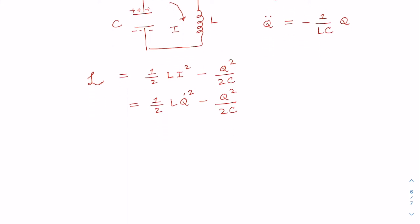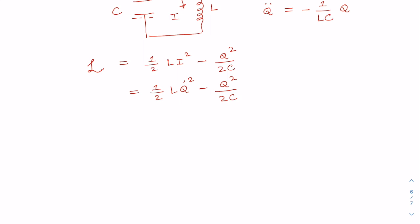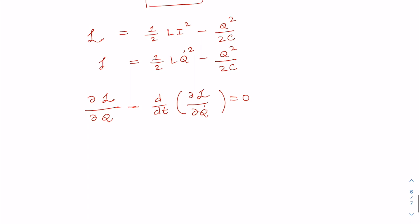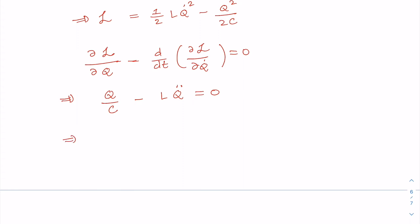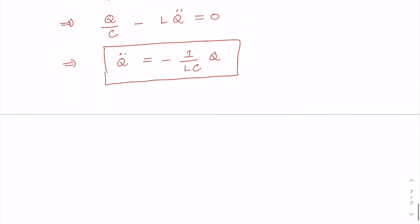To check if this is the correct Lagrangian, we apply the Lagrange equation of motion with Q as our generalized coordinate: (del L / del Q) minus d/dt (del L / del Q-dot) equals zero. The first term gives Q/C and the second gives L Q-double-dot, so we get Q-double-dot equals -(1/LC) Q. This is indeed the correct equation of motion, confirming our Lagrangian is correct.